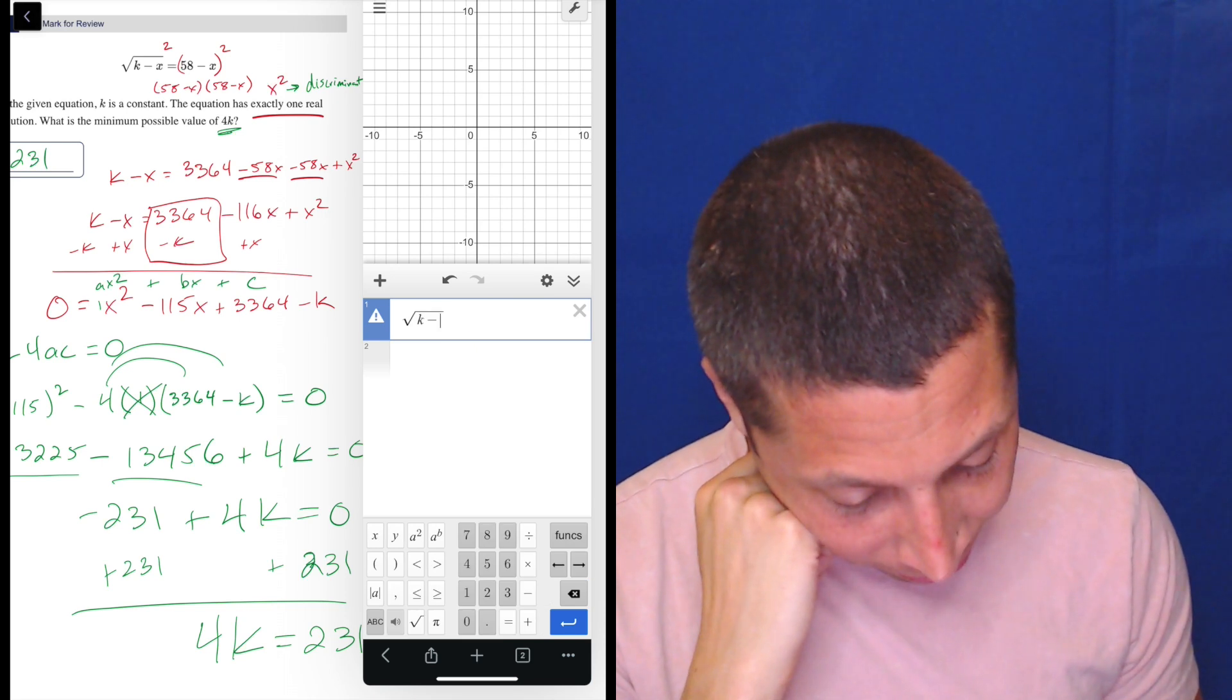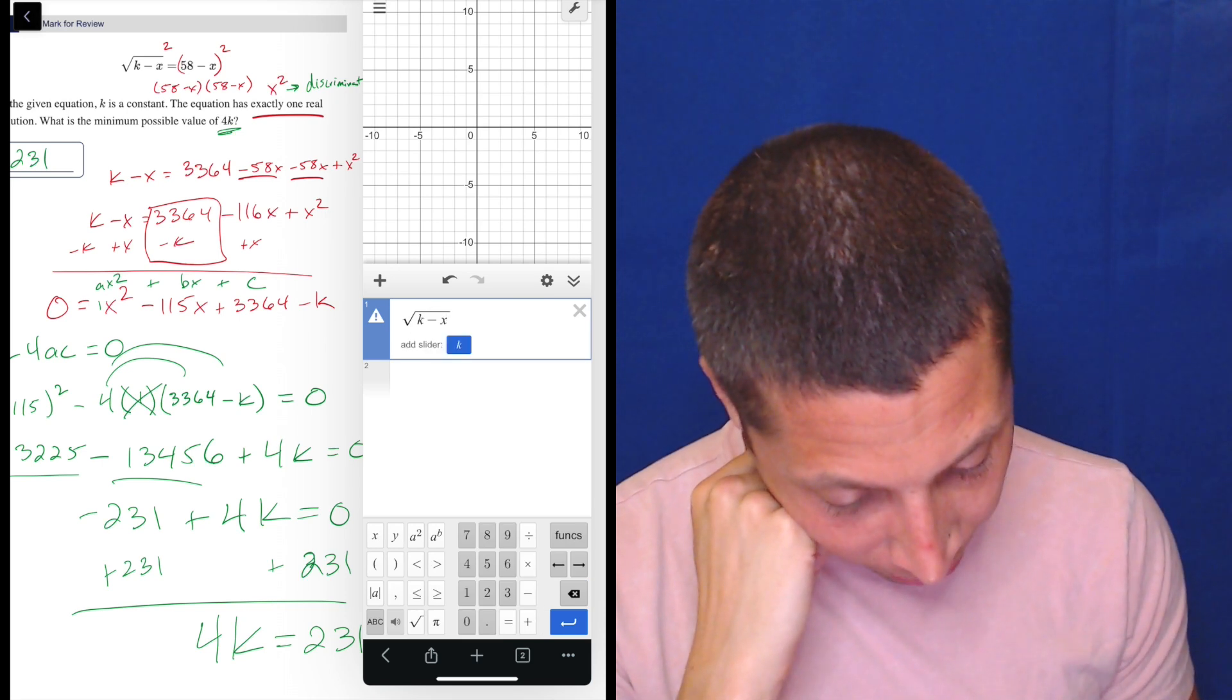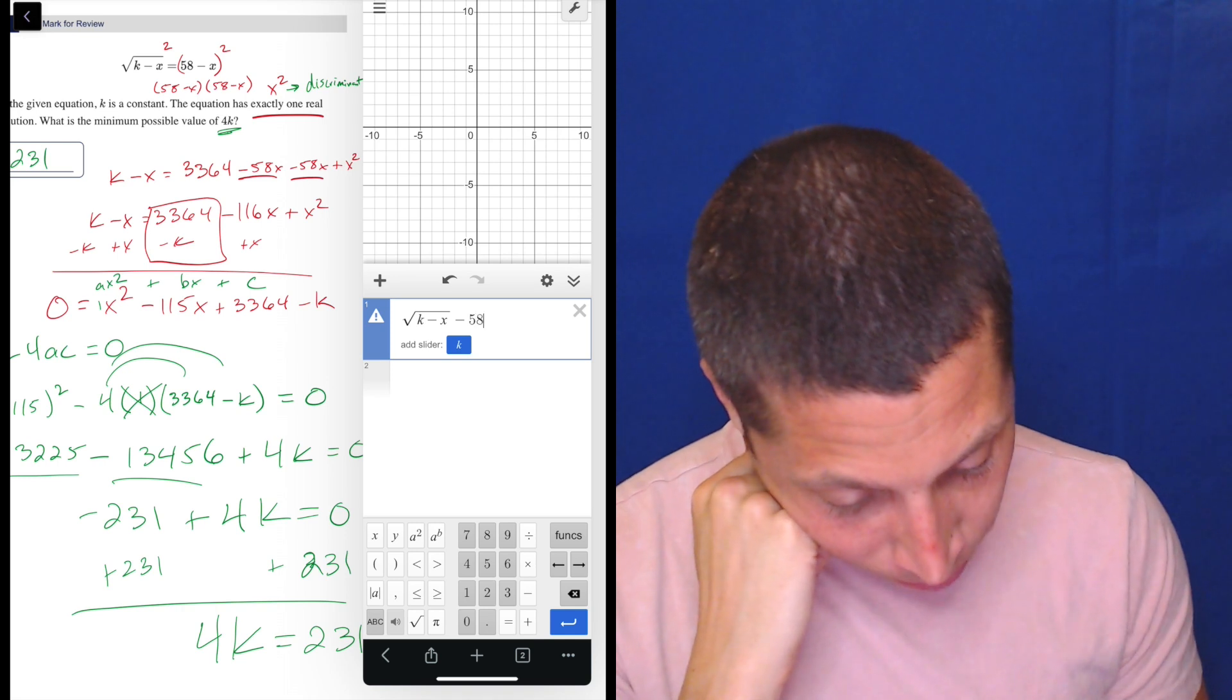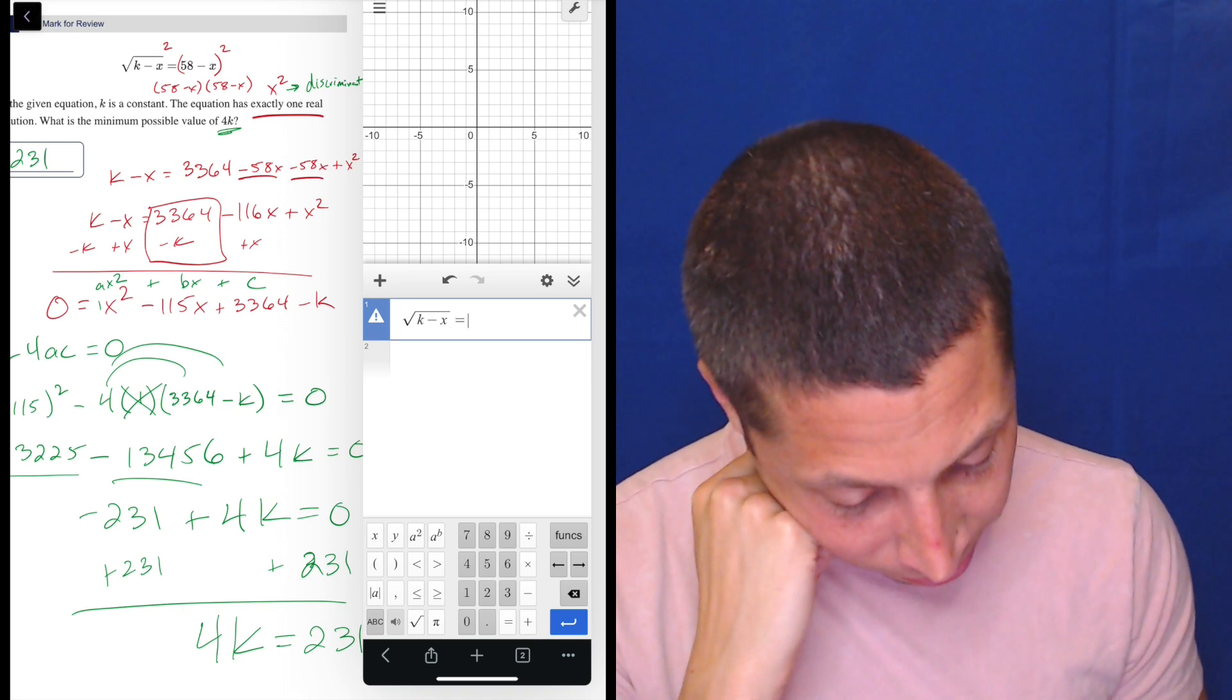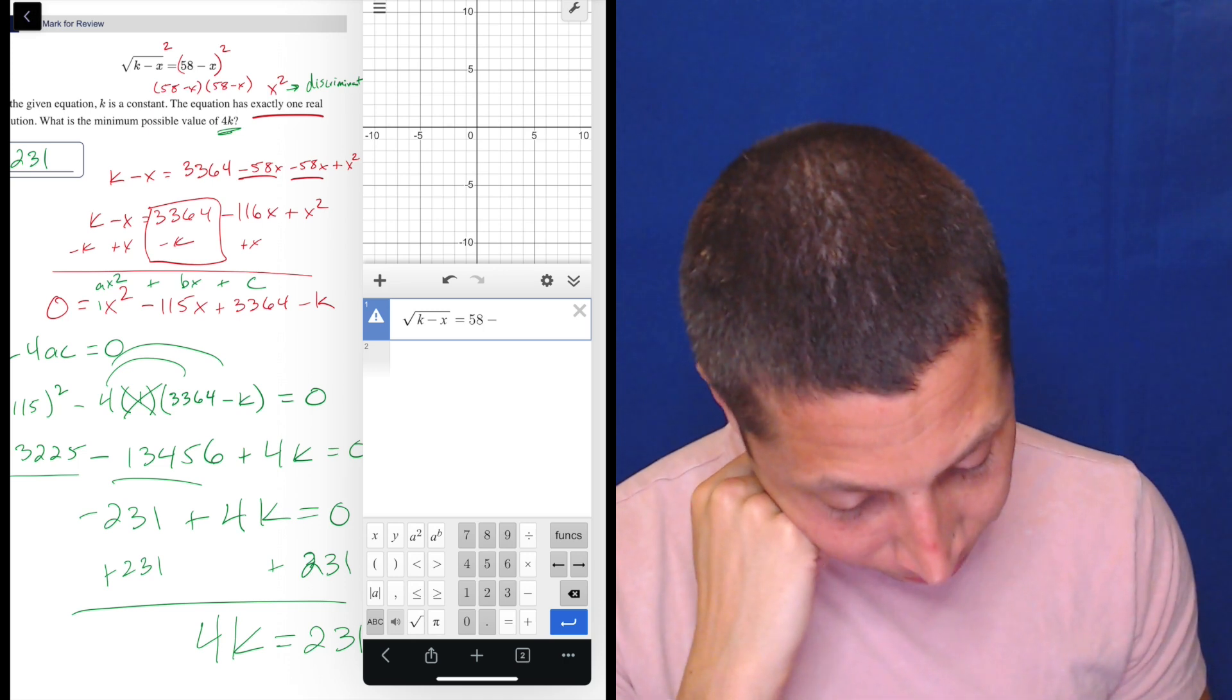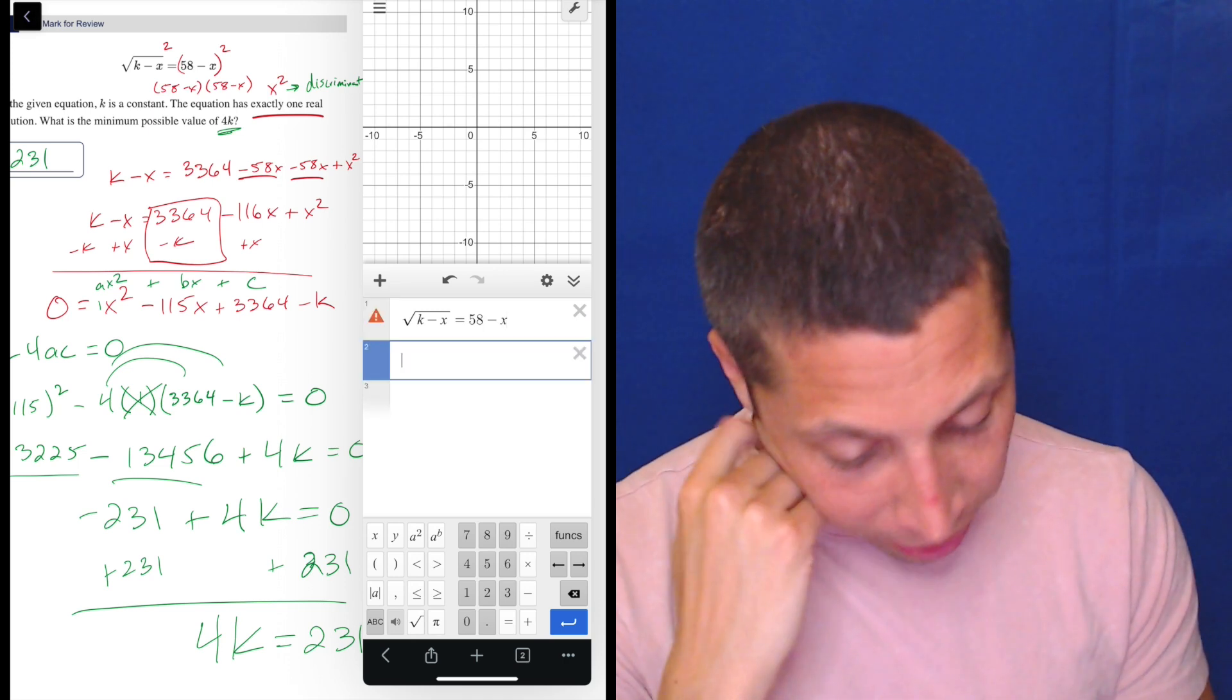k minus x, and then equals 58, Desmos on the iPad, always, I'm just missing buttons, 58 minus x. So it doesn't know what to do with that. You can see the little error thing.